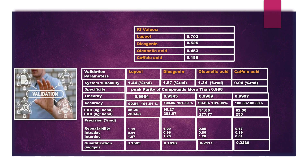Accuracy was found to be in the range of 99 to 100%. Quantification of lupeol, diosgenin, oleanolic acid, and caffeic acid was found to be 0.1585, 0.1696, 0.2111, and 0.2260 micrograms, respectively.